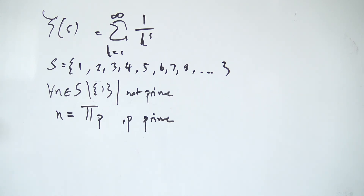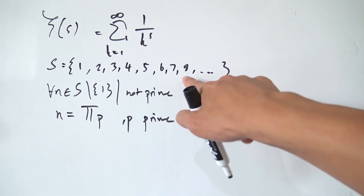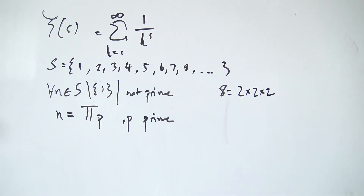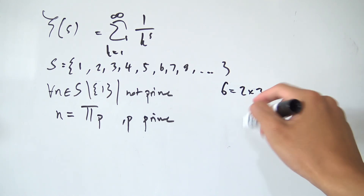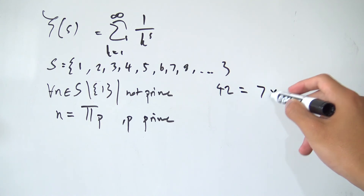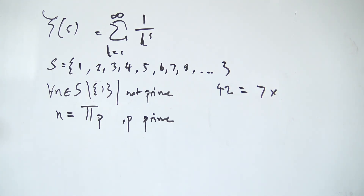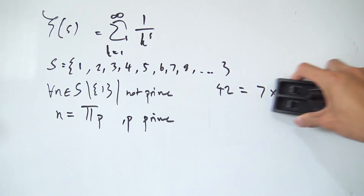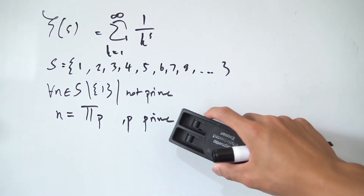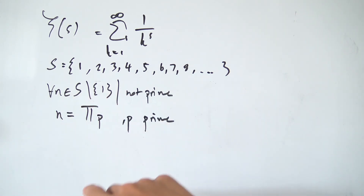Primes can be multiplied together in different ways to form any number in the natural numbers. For example, 8 can be decomposed into 2 times 2 times 2, and 2 is a prime number. 6 can be decomposed into 2 times 3, both prime. And something more exotic like 42 can be decomposed into 7 times 6, and 6 further into 3 times 2 — all primes. So every composite number in the natural numbers can be expressed as a product of some combination of primes. The reason we exclude 1 is that you can't decompose 1 into any prime numbers.